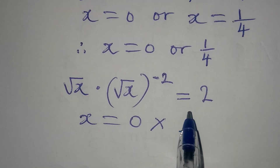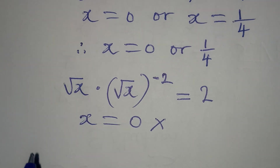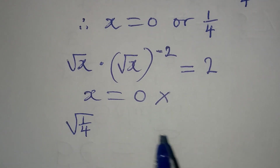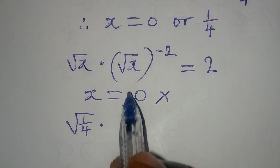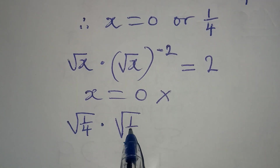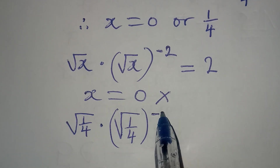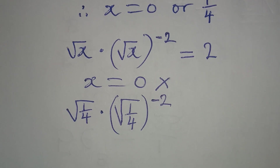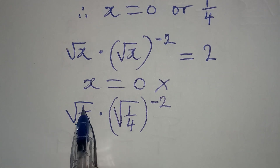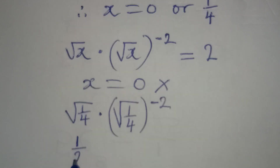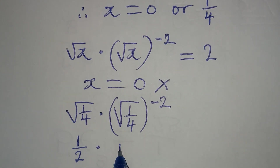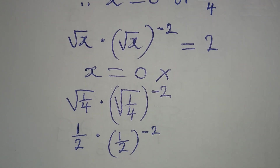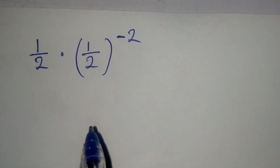What if we put x equal to 1 over 4? That means we have square root of 1 over 4, multiplied by square root of 1 over 4 raised to the power of negative 2. Square root of 1 over 4 gives us 1 over 2. Then we have 1 over 2 to the power of negative 2.